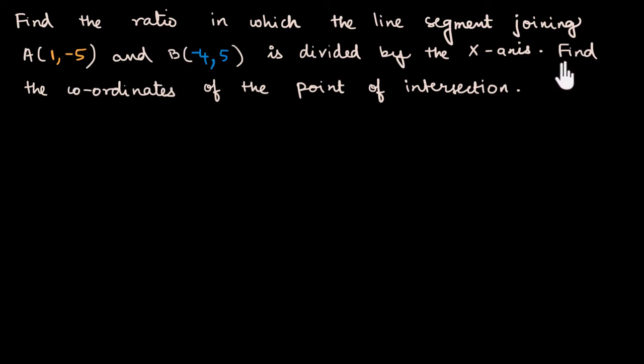In fact, if we read further, find the coordinates of that point of intersection where the x-axis meets this line segment. How do you want to do this? Let's first draw a diagram. Then let's look at the diagram to see what ideas we get, and then let's go ahead and find the ratio and the coordinates.